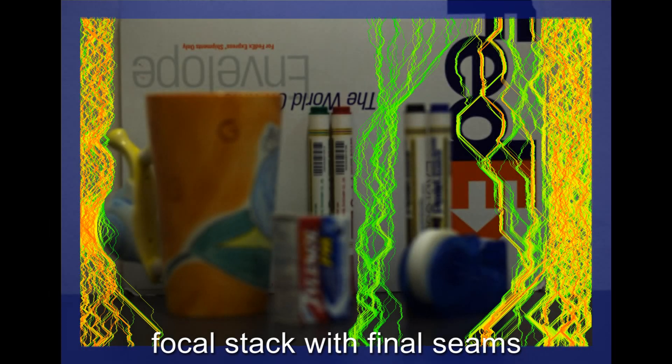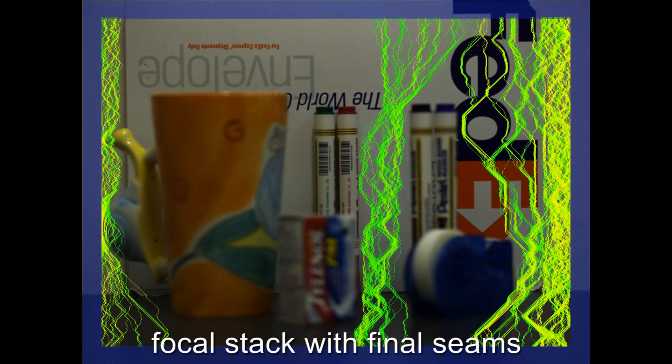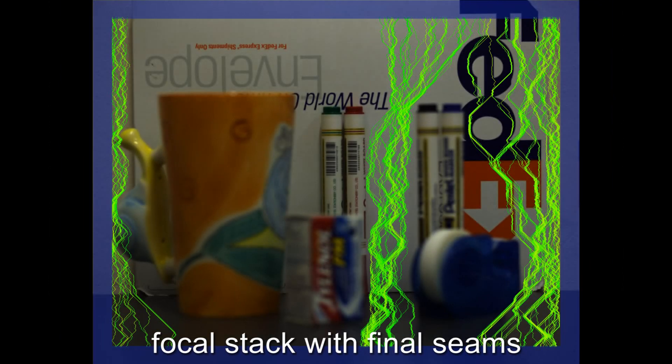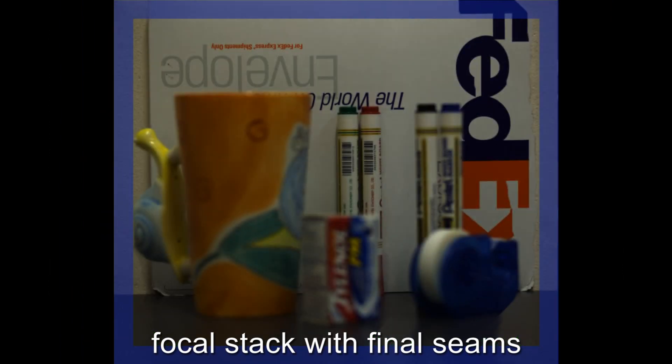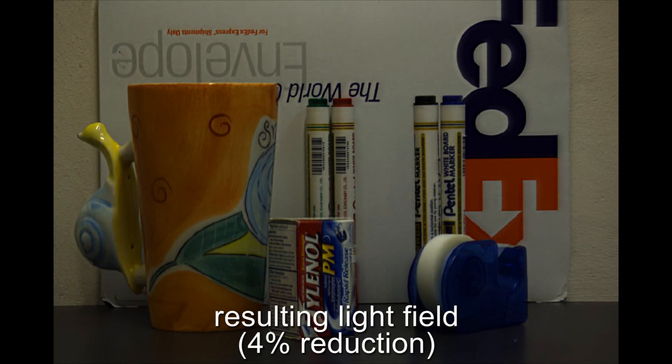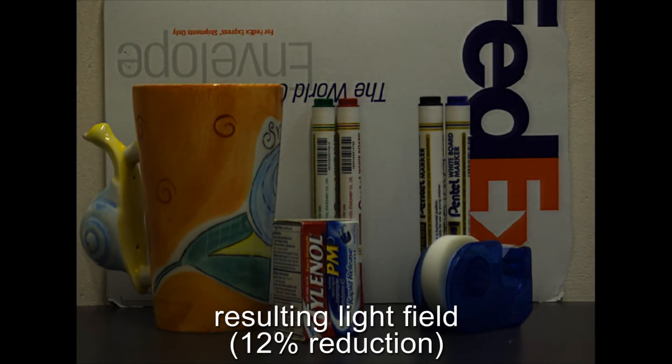All three energy terms lead to the final seams that are used for carving. The retargeted focal stack can be converted back to a light field by shifting and averaging its slices according to the desired perspective and by deconvolving the resulting image with a perspective-dependent point spread function.